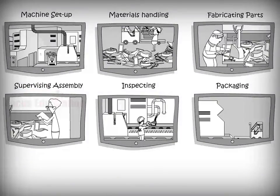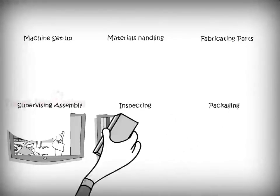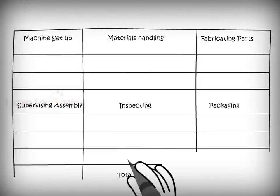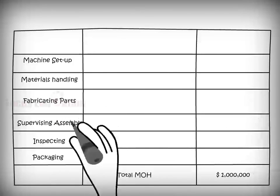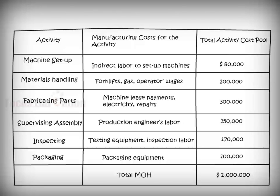With the activities established, the total manufacturing overhead costs of each activity – known as activity cost pools – must be estimated. Keeping in mind that all the costs in activity cost pools are manufacturing overhead costs, MOH, or indirect costs, they don't include direct labor and direct material costs.